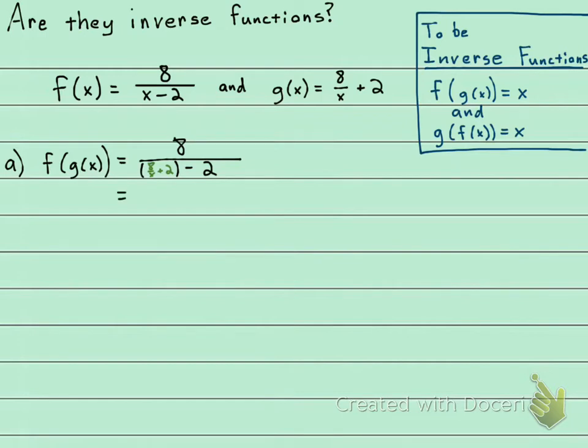Let's put it together. The numerator is just going to be 8. When you look at the denominator, we have 8 over x plus 2 minus 2. Plus 2 minus 2 will cancel out to be 0, so we have 8 over 8 over x.